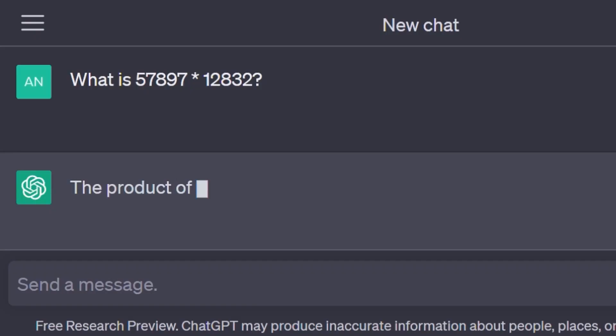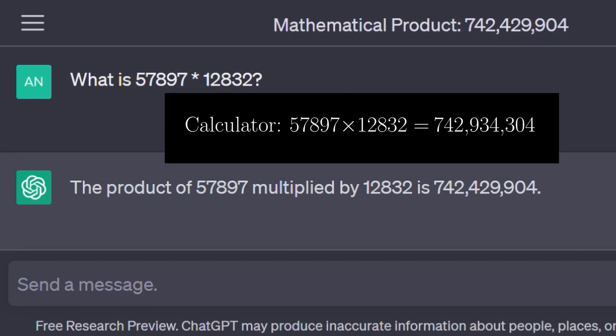ChatGPT can't multiply. Look, I'll give it two numbers and ask them to multiply them. And if we compare the output to a calculator, it's wrong.